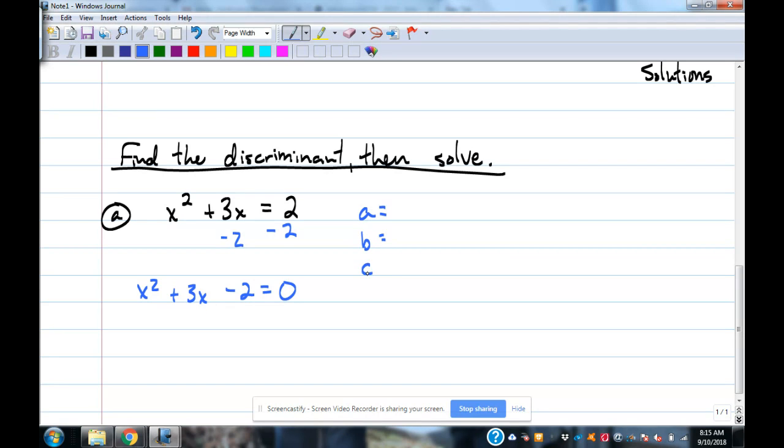In my Algebra 1 classes, when we're talking about this, and it's usually like, you know, February and March when we start talking about this stuff, I always make them list what A, B, and C are. And that way, when I go back and, you know, when they turn a problem in, I can check. If they can't list A, B, and C correctly, they don't have a chance of plugging it into the formula correctly. So a lot of times that's helpful to list that for a little bit just to make sure.